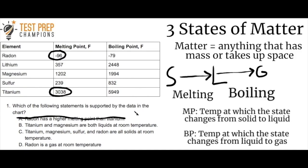Let's look at answer B: titanium and magnesium are both liquids at room temperature. First, room temperature (RT) is about 70 degrees Fahrenheit. We need to check the melting point, because that's the temperature at which the state changes from solid to liquid. Magnesium's melting point is 1202 degrees Fahrenheit — well above 70 degrees — so at room temperature, magnesium is going to be a solid. That already makes B false.